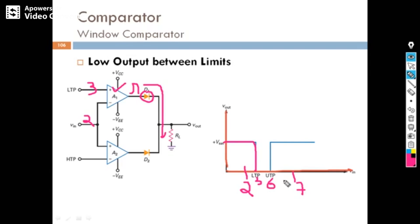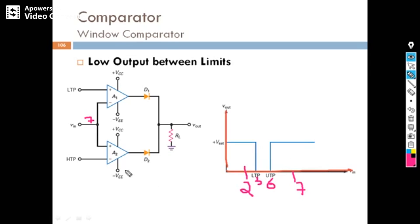Now my input is seven, which is above UTP of six. Seven is greater than six, meaning positive is greater than negative at the second comparator — output is V-sat, which forward biases that diode, and it conducts. In this case also, output is V-sat.